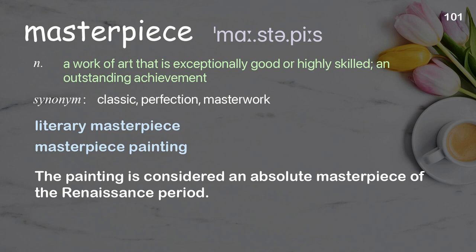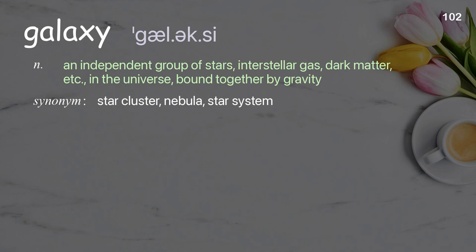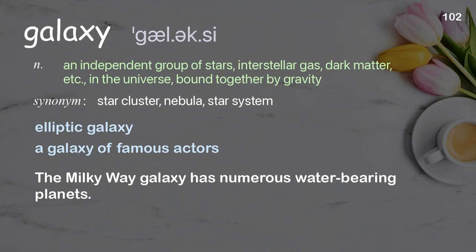Galaxy: an independent group of stars, interstellar gas, dark matter, etc., in the universe, bound together by gravity. Examples: elliptic galaxy, a galaxy of famous actors. The Milky Way galaxy has numerous water-bearing planets.